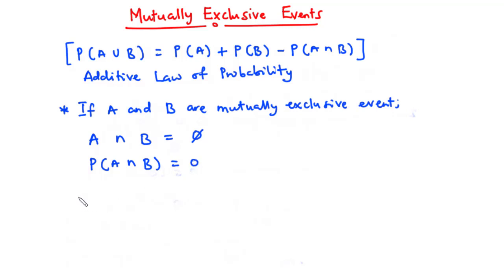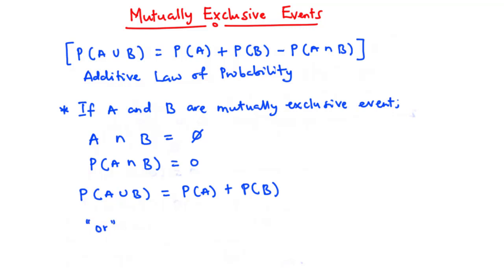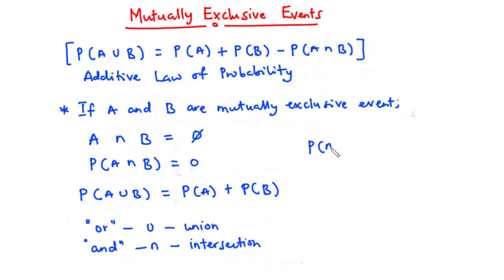Therefore, the additive law of probability reduces to: P(A∪B) = P(A) + P(B). Notice that in probability, the word 'or' represents union, and the word 'and' represents intersection. Therefore, the probability of A or B is the same as the probability of A union B.